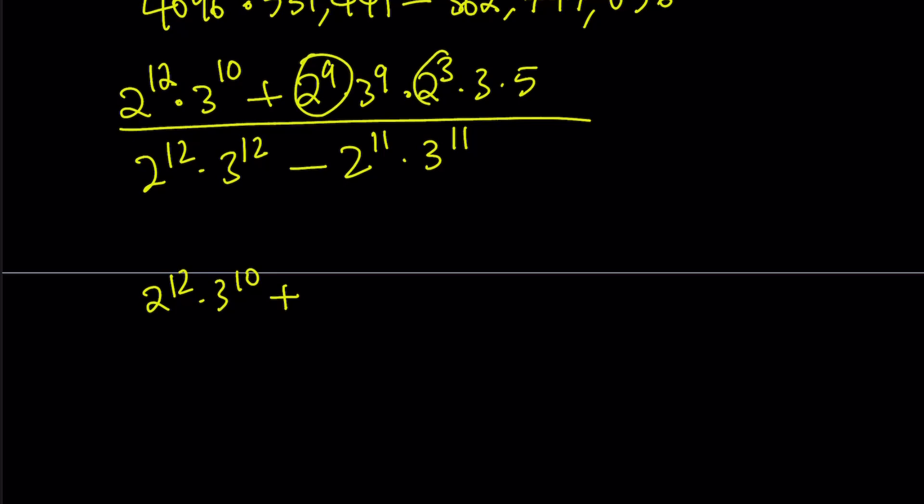But here, we can combine 2 to the 9th and 2 to the 3rd. We can multiply them by adding exponents. That's going to make 2 to the power of 12th. And then I have 3 to the 9th power with 3 to the 1st power, which can be written as 3 to the 10th power. And 5 is just going to stay. And then at the bottom, we don't really have much to do, so let's just leave it as is for right now.